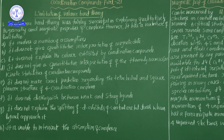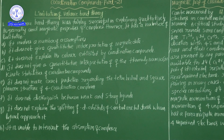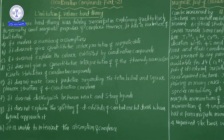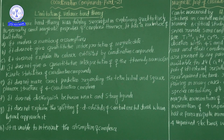It does not distinguish between weak and strong ligands. For example, water is a weak ligand and fluorine is a weak ligand, but the theory gives no basic differentiation explaining why some ligands are strong and some are weak. Moreover, when strong ligands approach the central metal atom, unpaired electrons pair up, but when weak ligands approach, unpaired electrons do not pair up. This information is also not explained in VBT theory.